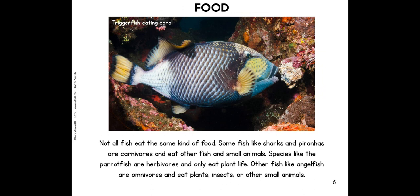Food. Not all fish eat the same kind of food. Some fish, like sharks and piranhas, are carnivores and eat other fish and small animals. Species like the parrotfish are herbivores and only eat plant life. Other fish, like angelfish, are omnivores and eat plants, insects, and other small animals.